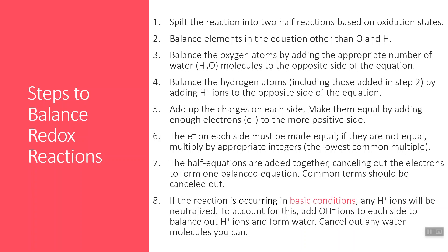Then you're going to balance all of the elements in the equation other than oxygen and hydrogen. Next, we balance oxygen atoms by adding the appropriate number of water molecules to the opposite side of the equation. Then we balance the hydrogen atoms, including those added in the previous step, by adding H+ ions to the opposite side.